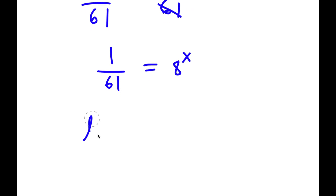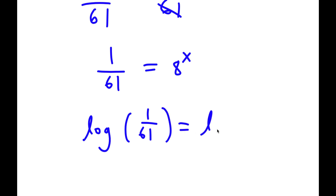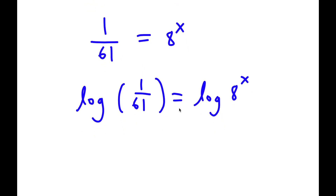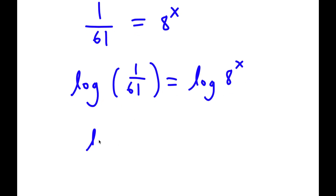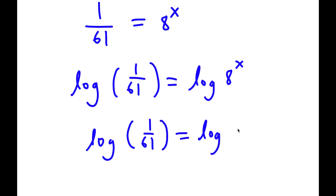Now if I take the log on both sides, I have log of 1 over 61 is equal to log of 8 to the power of x. So now I have log of 1 over 61 is equal to log of 2 to the power of 3, to the power of x.